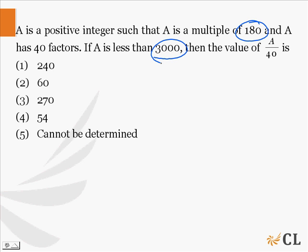So look at the choices. Simply, if you take the value of a/40 as 240, straight away the value of a becomes greater than 3000. In a similar way, we can say that option 3 cannot be my answer because even in this case, when I substitute a/40 equal to 270, the value becomes greater than 3000.